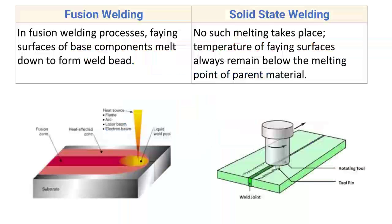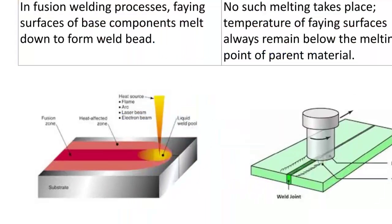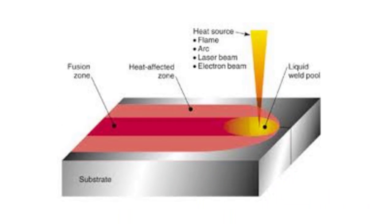The first difference: in fusion welding processes, the faying surface of the base component melts down to form the weld bead. In the fusion welding process, heat is applied externally by a suitable heat source to melt the faying surface of the base component to get the weld bead.